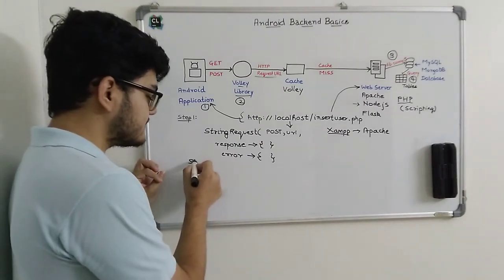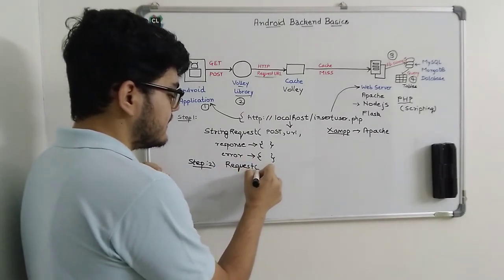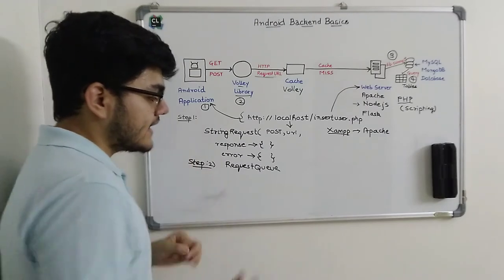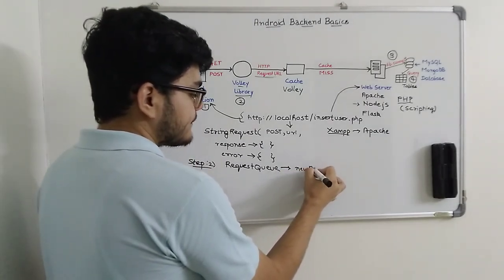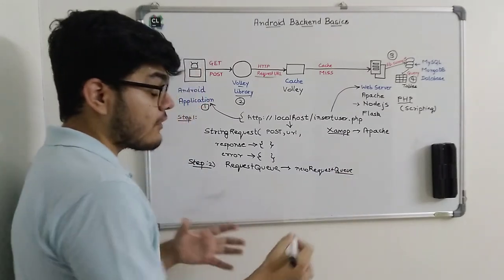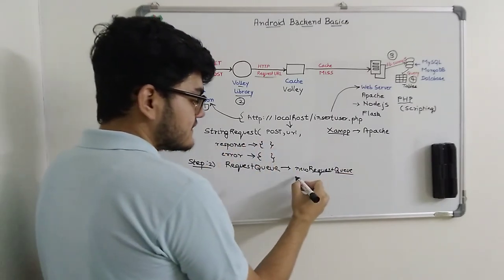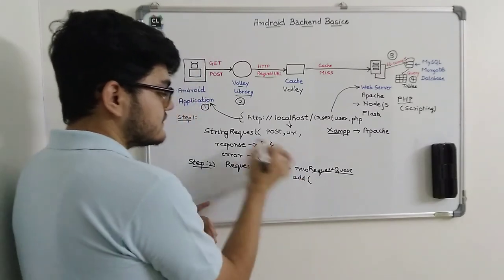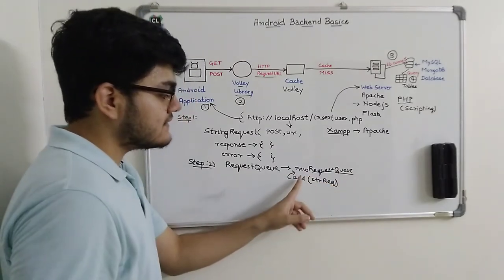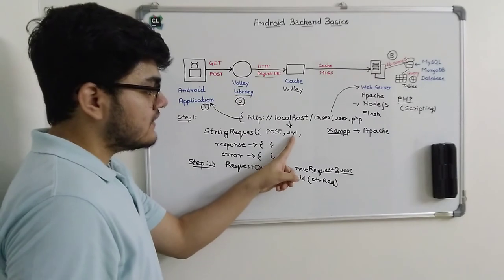After generating the request, step number two is very simple. We are going to create an object of the RequestQueue class, which is again a class of the Volley library. Basically, RequestQueue is a queue where we keep all the requests. First we create the request queue, and then we add the StringRequest object inside this queue. When we add the request to the queue, the Volley library will execute the request using the POST method with the given URL.